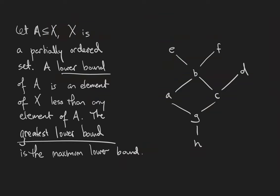Let a be a fixed subset of a partially ordered set x. A lower bound of a is an element of x that is less than any element of a. The greatest lower bound is the maximum of all the lower bounds. We can play the same game where we turn the definition around. An upper bound of a is an element of x that is greater than any element of a. The least upper bound is the minimum of the set of upper bounds.